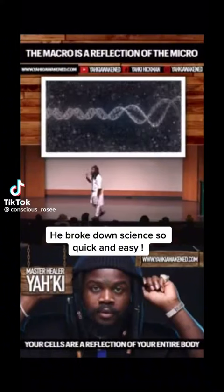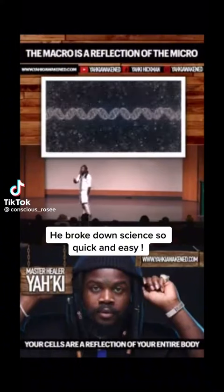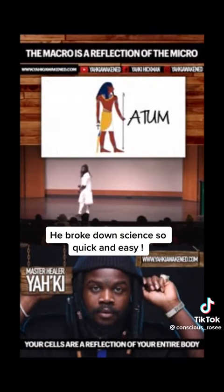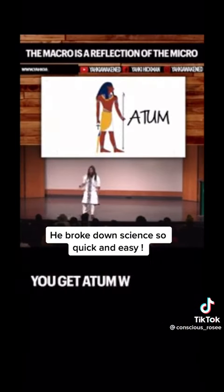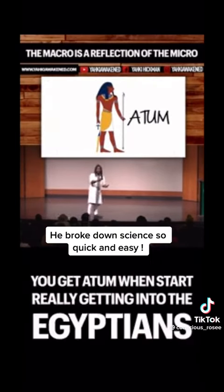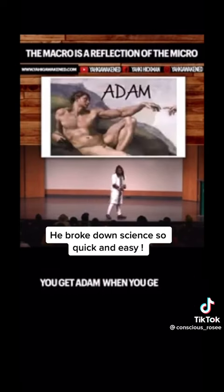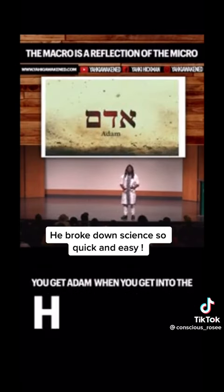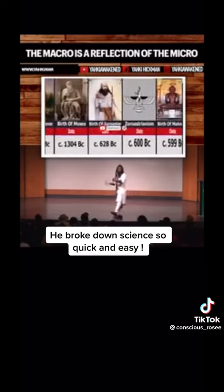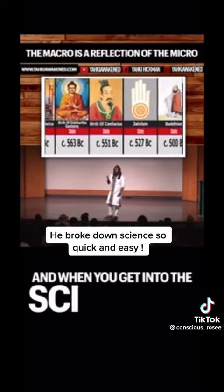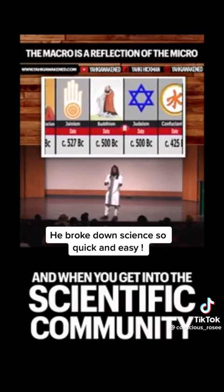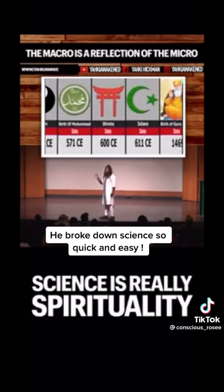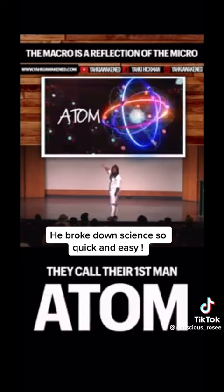Now we got to dive deep into the cells and break down what's going on inside of the cells. The atom — you get Atum when you start really getting into the Egyptians. You get Adam when you get into Christianity. You get Adam when you get into the Hebrew. We can keep going, so on and so forth. And when you get into the scientific community — because science is a part of somebody else's culture, science is really spirituality — they call their first man Atum.